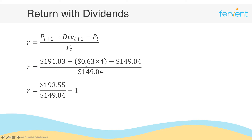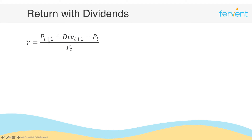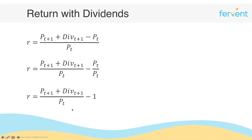The $193.55 comes from $191.03 plus $0.63 times 4, which equals $2.52, giving $193.55. We then subtract $149.04 divided by $149.04, which equals 1. So the equation simplifies to $193.55 over $149.04 minus 1. Solving this, the return on Apple is 29.86%. Using notation: the return is p(t+1) plus div(t+1) over pt minus 1, because pt over pt always equals 1.